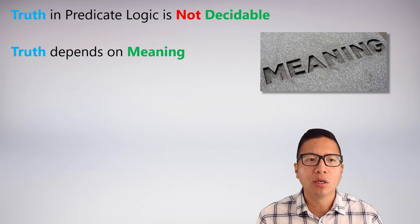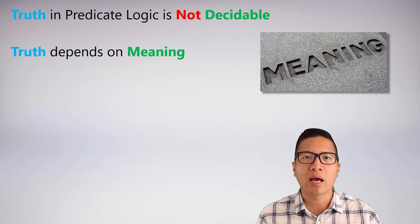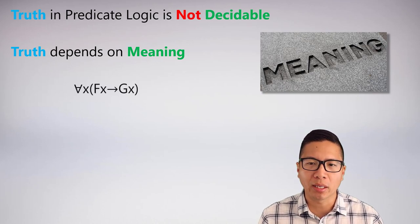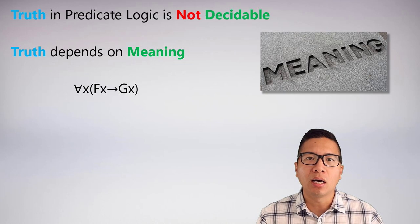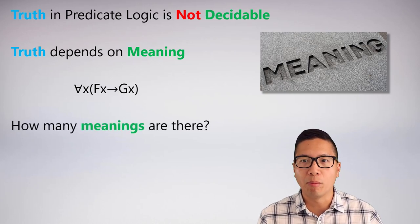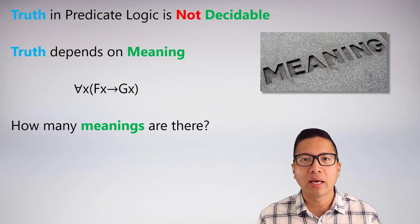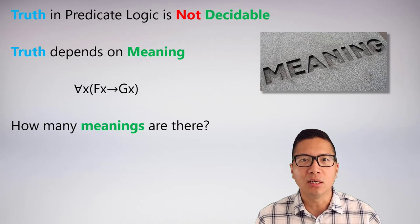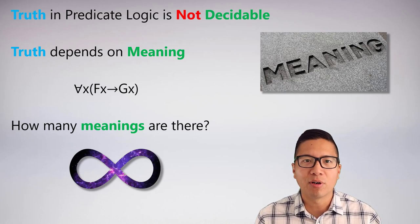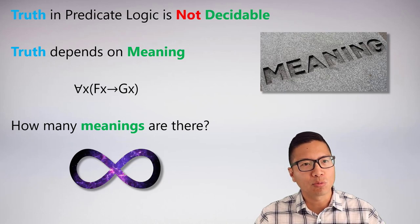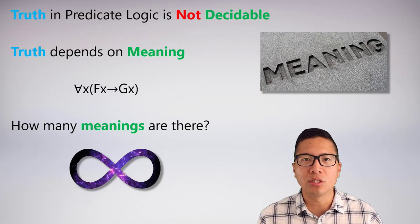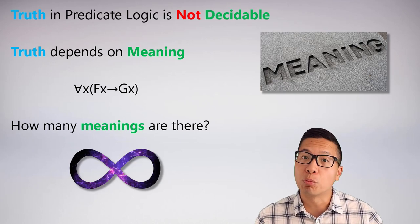So the real problem in predicate logic in terms of this decidability issue and how we should understand the truth and meaning of these statements is that the truth fundamentally does depend on the meaning of the predicates—and actually more than just the predicates. If truth depends on meaning, then we're immediately led to the next question. How many meanings are there? And, as I'm sure many of you have predicted, the answer here is a lot. In fact, not just a lot. The answer is infinitely many. And because it's infinitely many, that's precisely why we can't actually just generate this really nice, beautiful computer program that can solve all these problems for us.